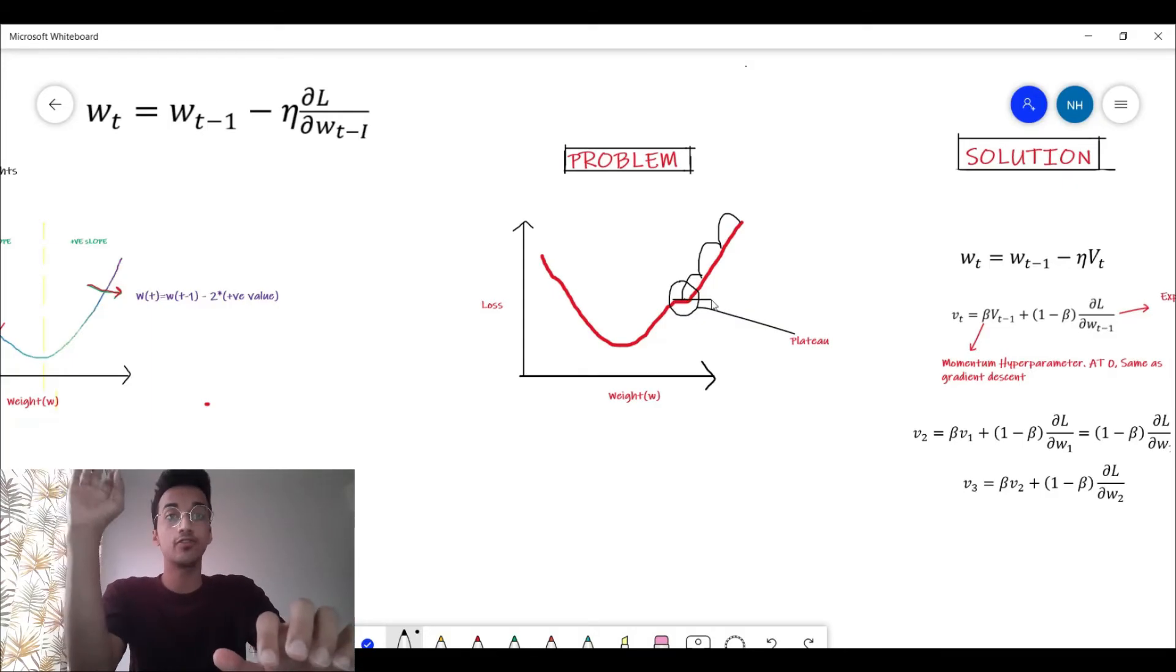The model will get fooled into thinking that hey, I have reached the global minima and we have got the perfect loss. However this is not the case. We can see we still have to move forward a lot of steps before we reach the global minima. What could we have done here to avoid this issue?